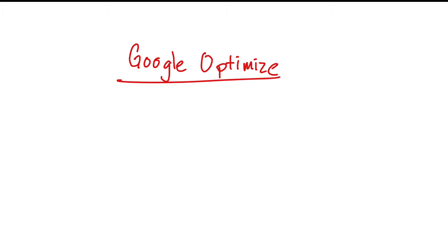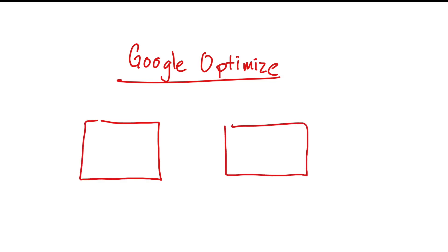Google Optimize is used for splitting up traffic to compare different designs or different elements on a page. I created this home page here — home A — and then I created home-B here. This was the original and the new design. I just used Google Optimize to split the traffic 50/50, so half of them would go to the new version and half of them would go to the old version.